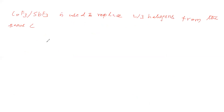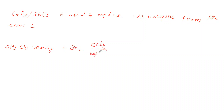Next reaction: we take a silver salt of carboxylic acid — for example CH3CH2COOAg — and treat it with Bromine in Carbon tetrachloride solvent under reflux. The product we get is CH3CH2Br, plus CO2 plus AgBr.